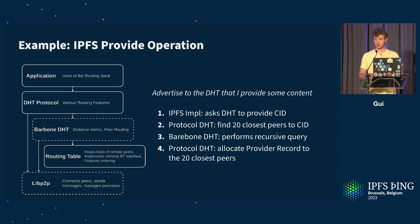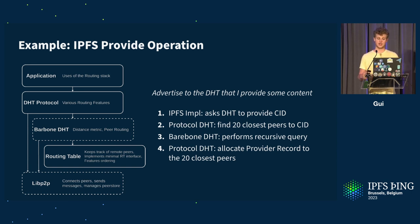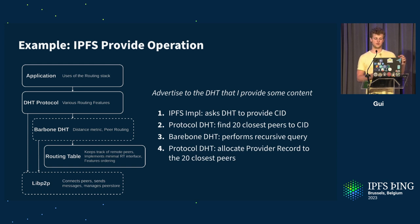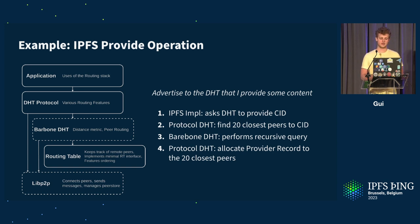How does the IPFS provide operation work? Kubo tells the DHT: I have this block, please advertise this CID. The DHT protocol asks the bare-bone DHT for the 20 closest peers to this CID. The bare-bone DHT looks up closer peers in its routing table and sends messages via LibP2P to find the closest peers. Once found, it returns them to the DHT protocol, which then sends an IPFS-specific RPC directly via LibP2P asking each peer to store the provider record, and finally returns completion to Kubo.